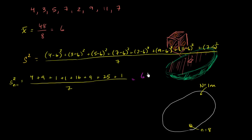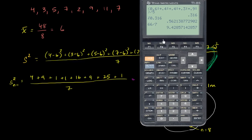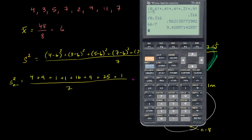Adding those up: four plus nine is thirteen, plus one is fourteen, fifteen, thirty-one, forty, sixty-five, sixty-six. So this equals 66 over seven, which is nine and three sevenths, or approximately 9.43. So our unbiased sample variance is approximately 9.43.